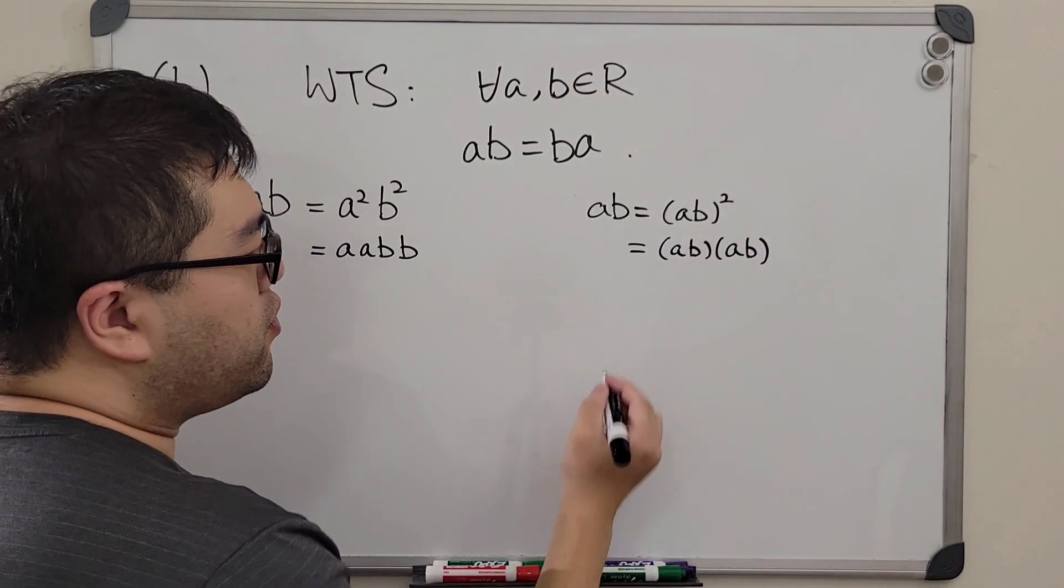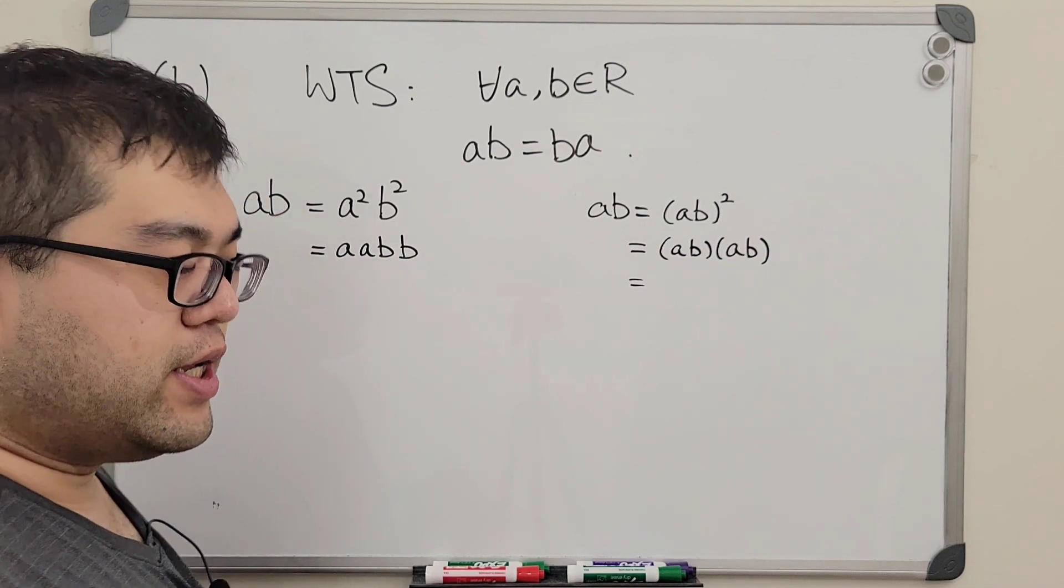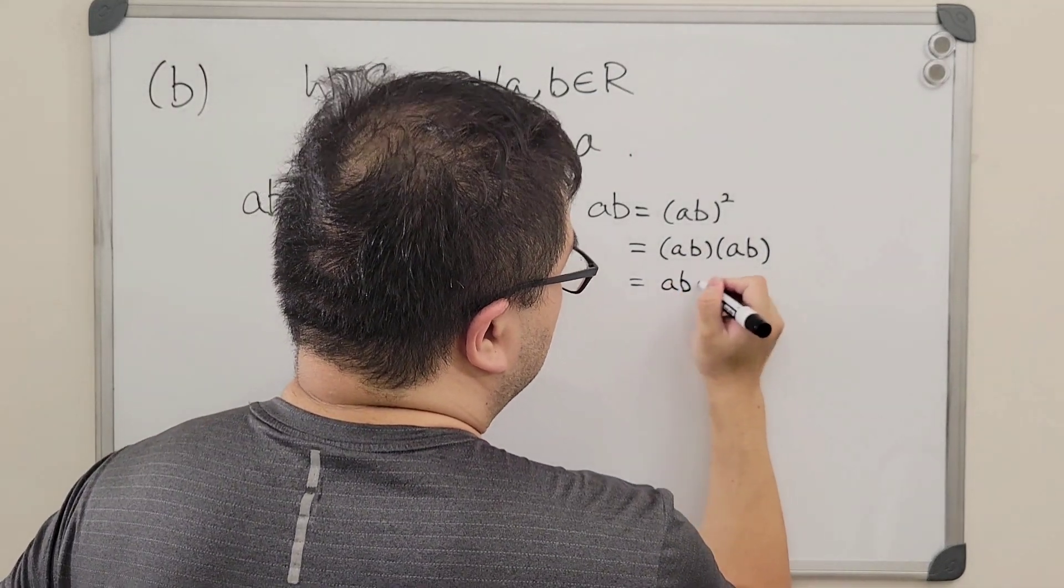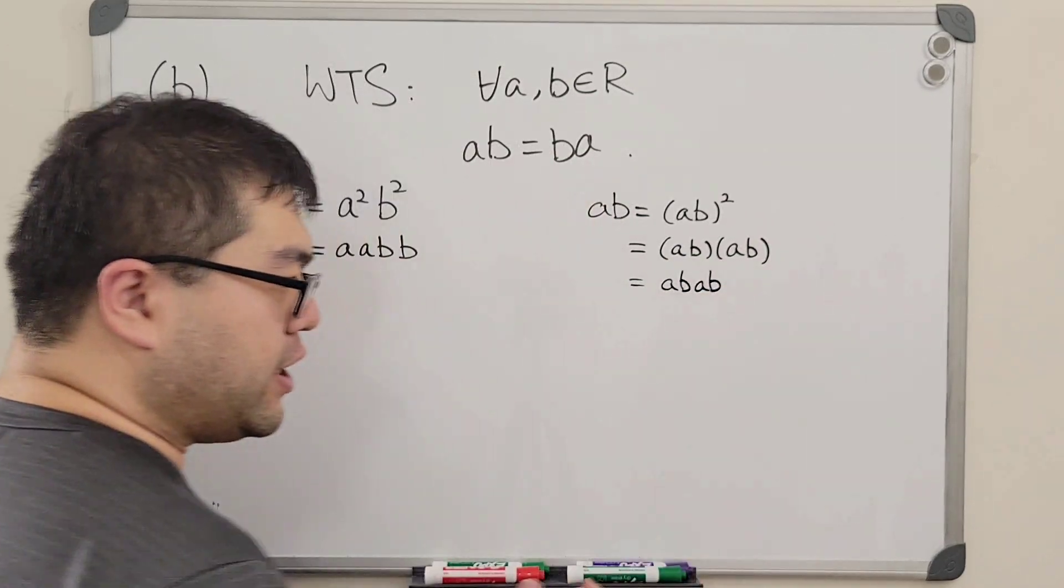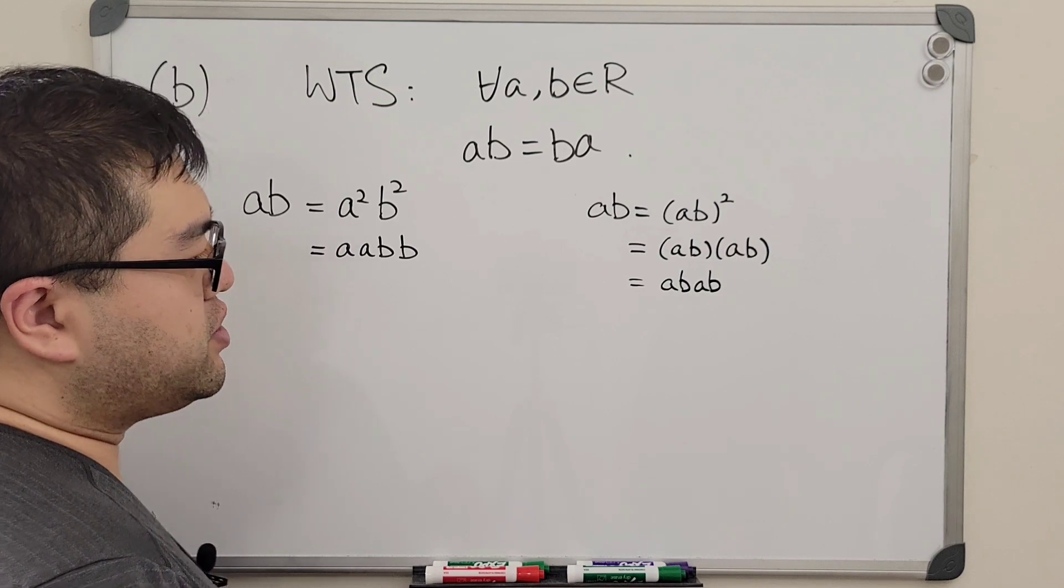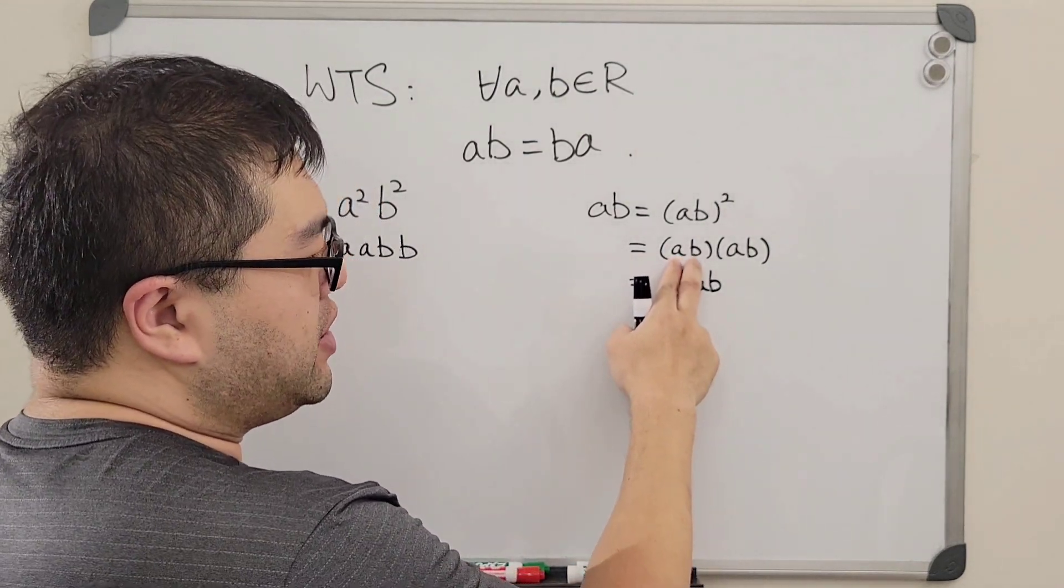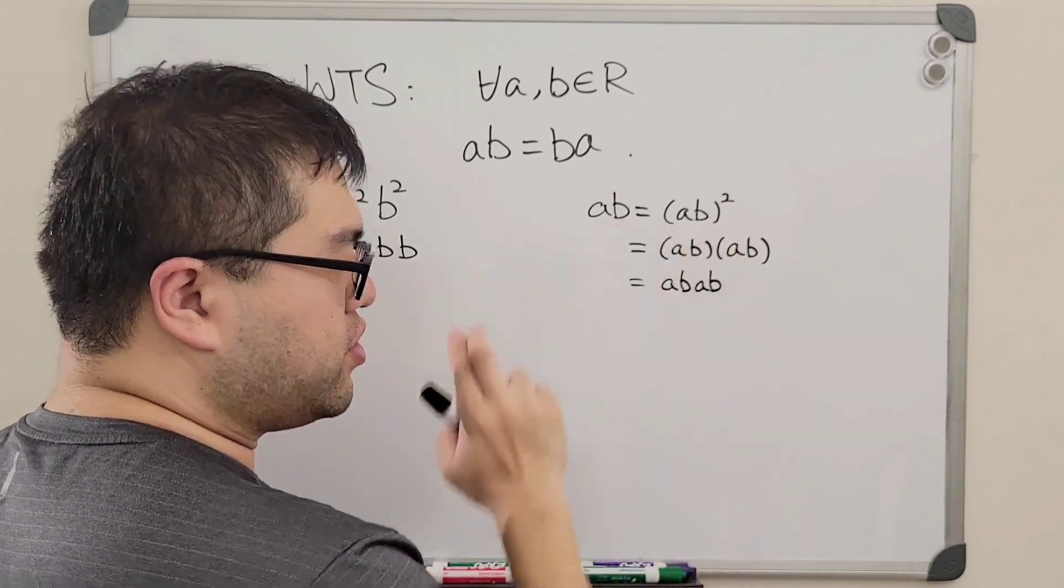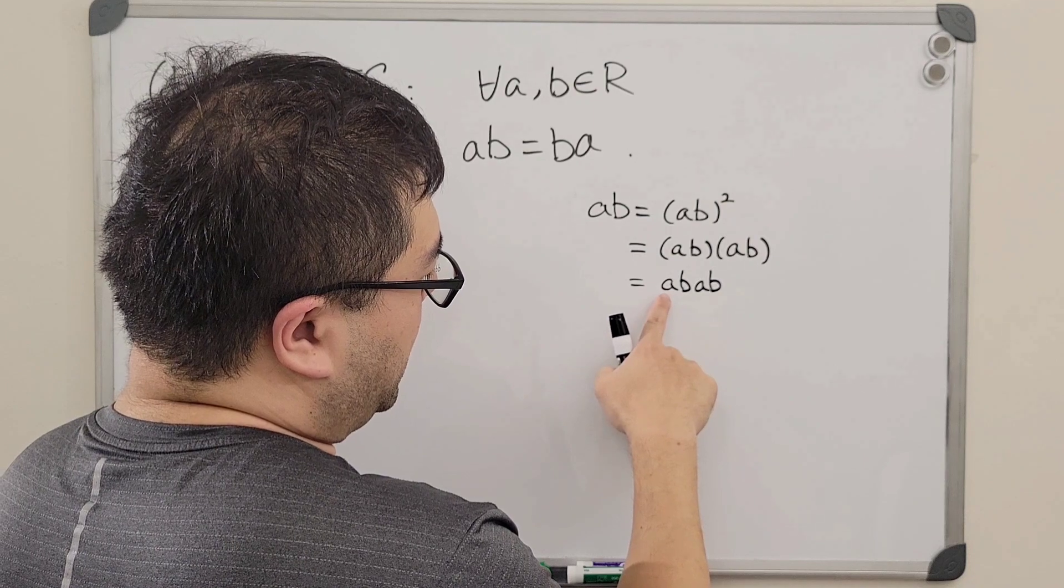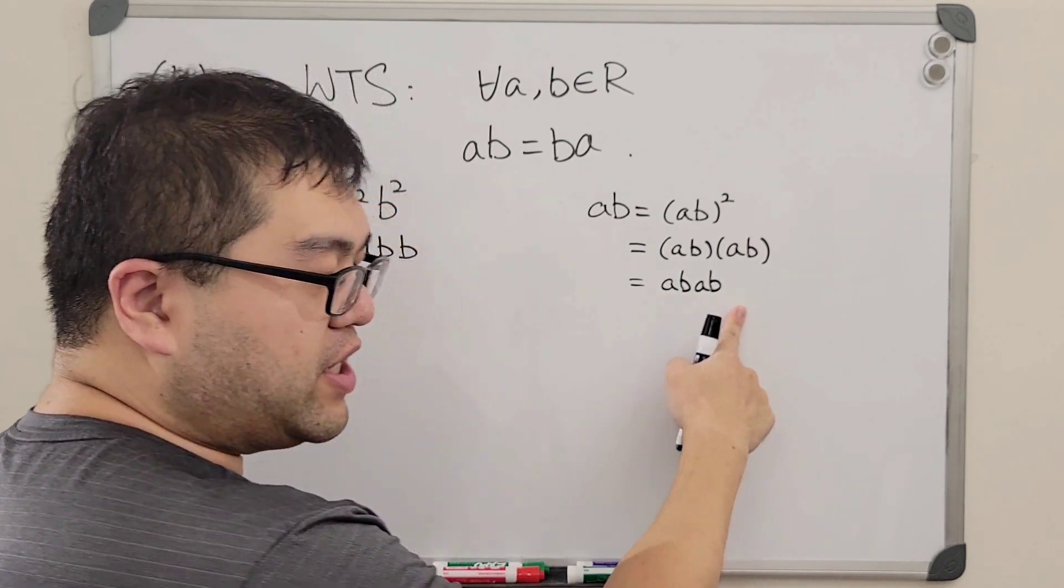And now we're going to break and multiply together and put them all at once, because again R is a ring, it is associative under multiplication. Meaning that it does not matter whether I multiply the ab first before I put them together, or do the b times a first and then multiply with a and then multiply with b later on.